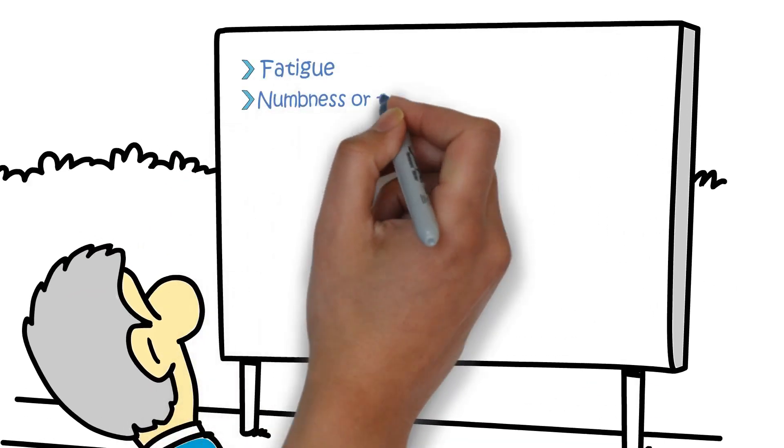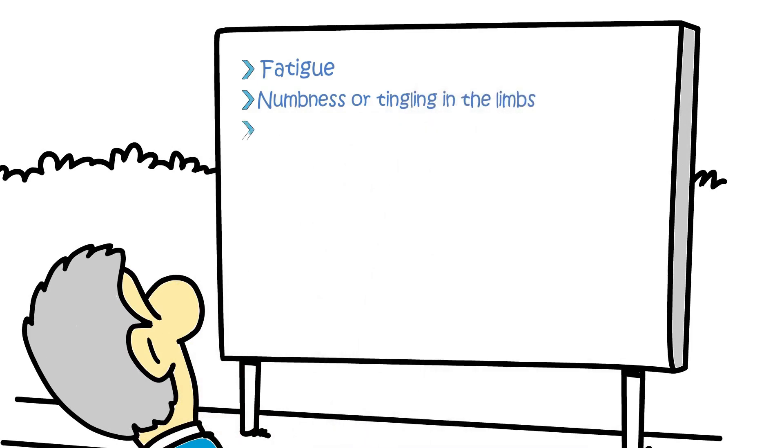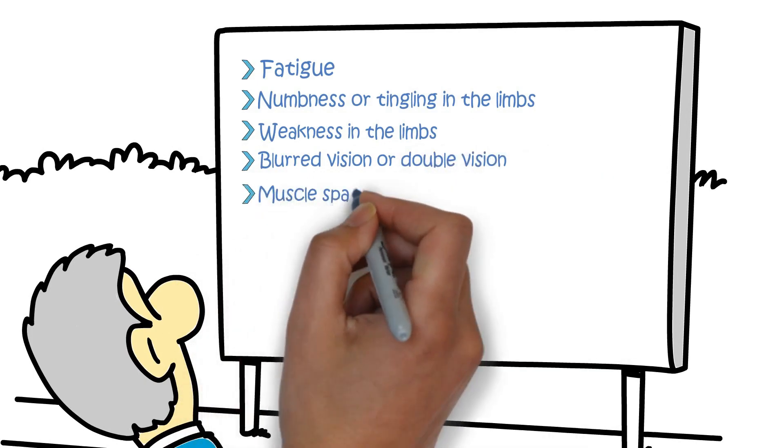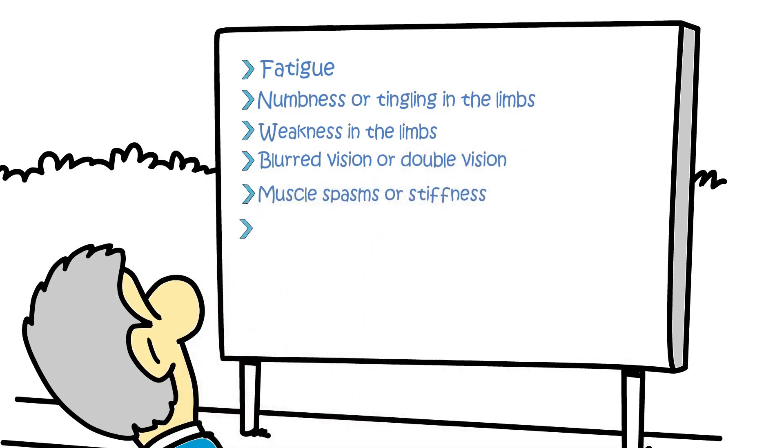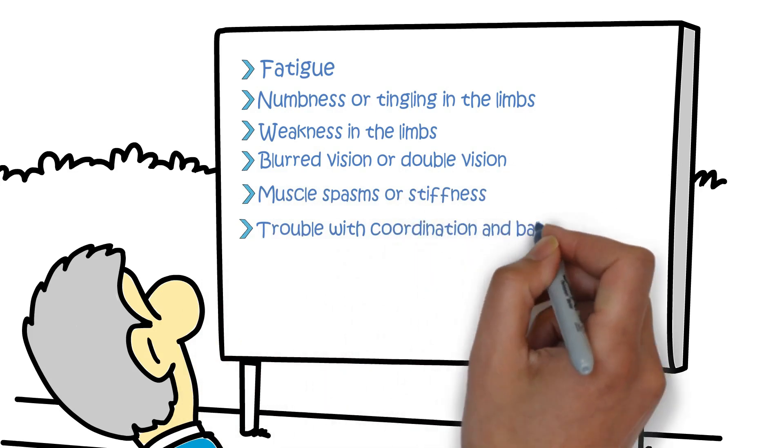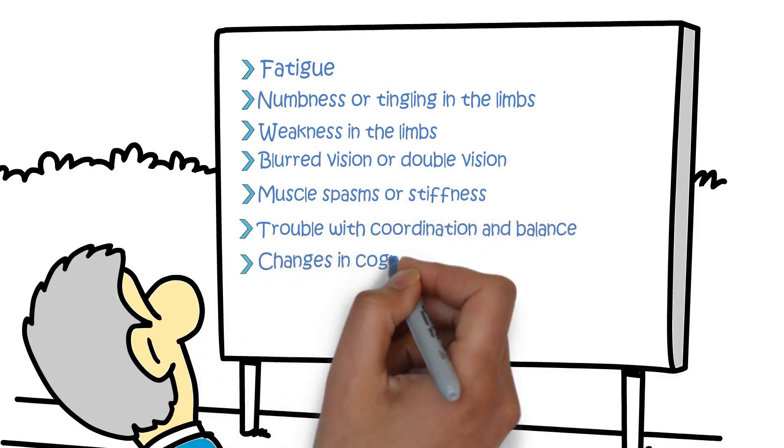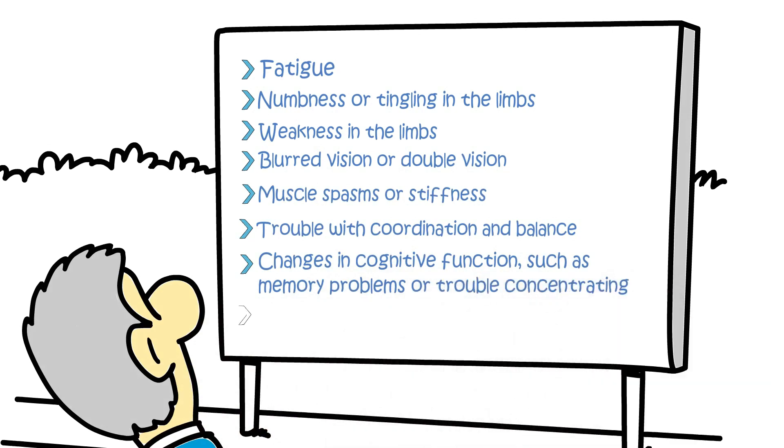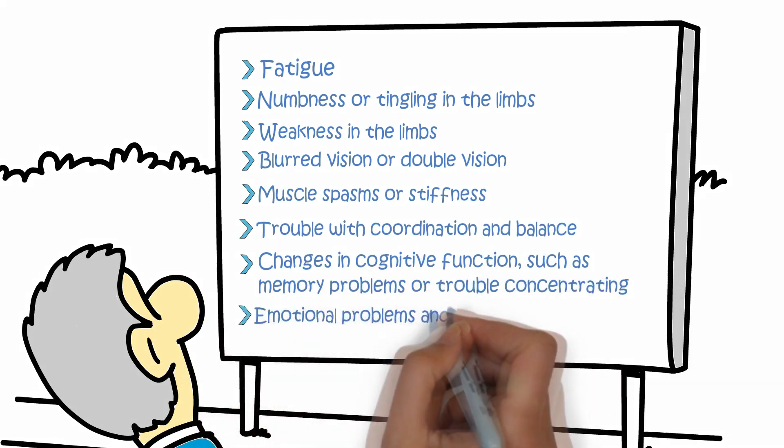Fatigue. Numbness or tingling in the limbs. Weakness in the limbs. Blurred vision or double vision. Muscle spasms or stiffness. Trouble with coordination and balance. Changes in cognitive function, such as memory problems or trouble concentrating. Emotional problems and depression.